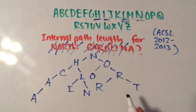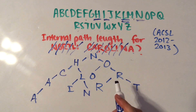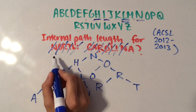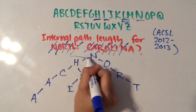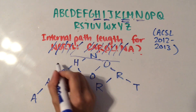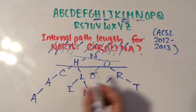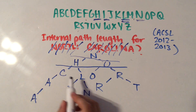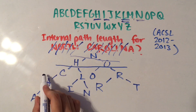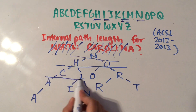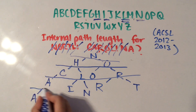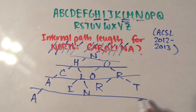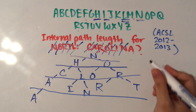To get the internal path length we'll have to divide these into their separate levels. This N is at the topmost level. Then H and O come next. Then C, L, O, and R. And then there's A, I, N, R, and T. And then A is all by itself down at the bottom.